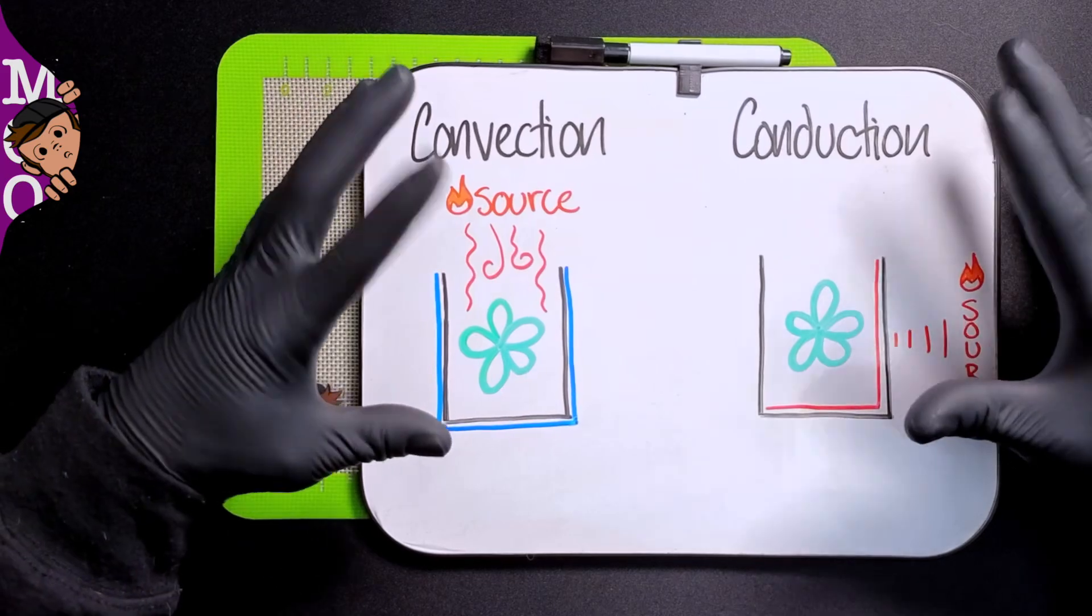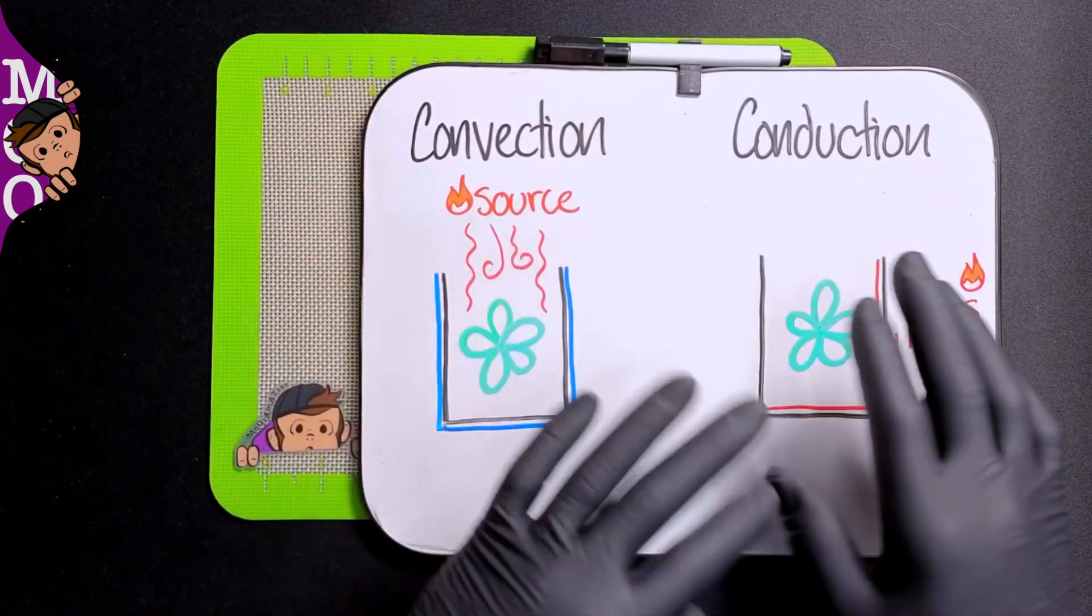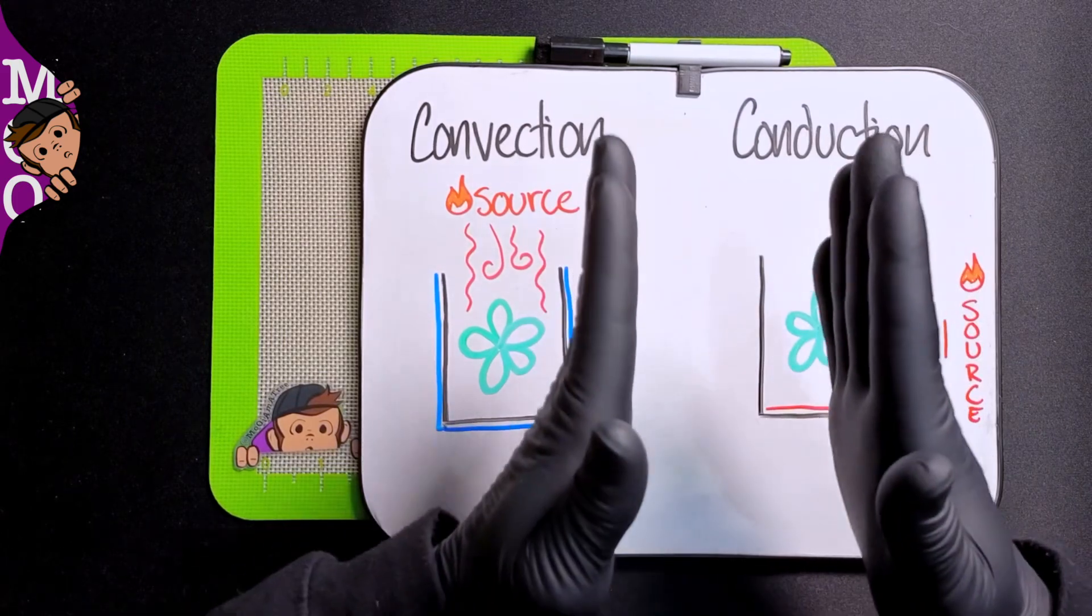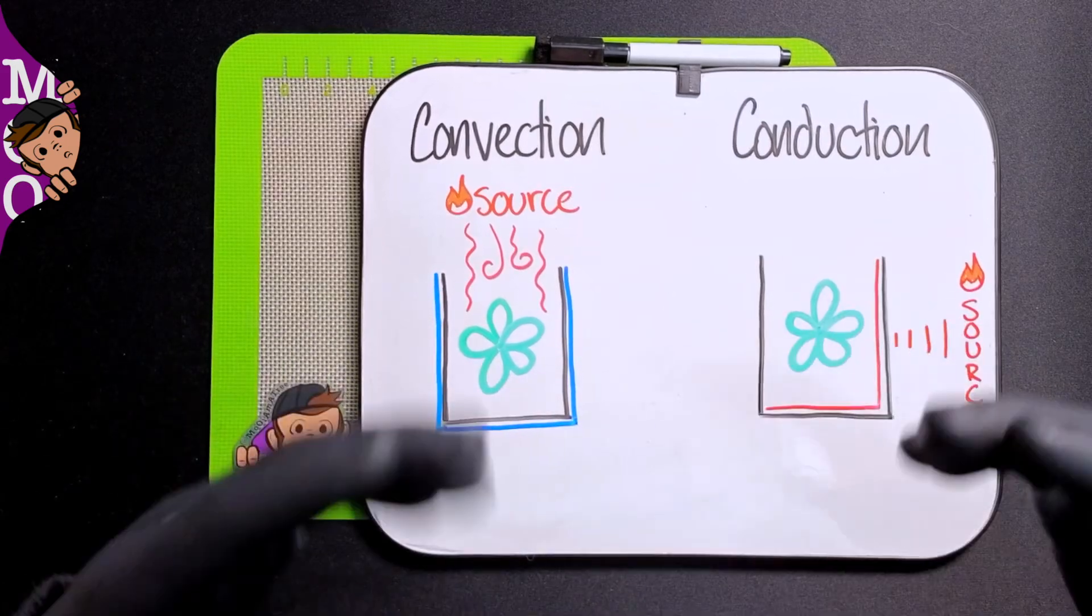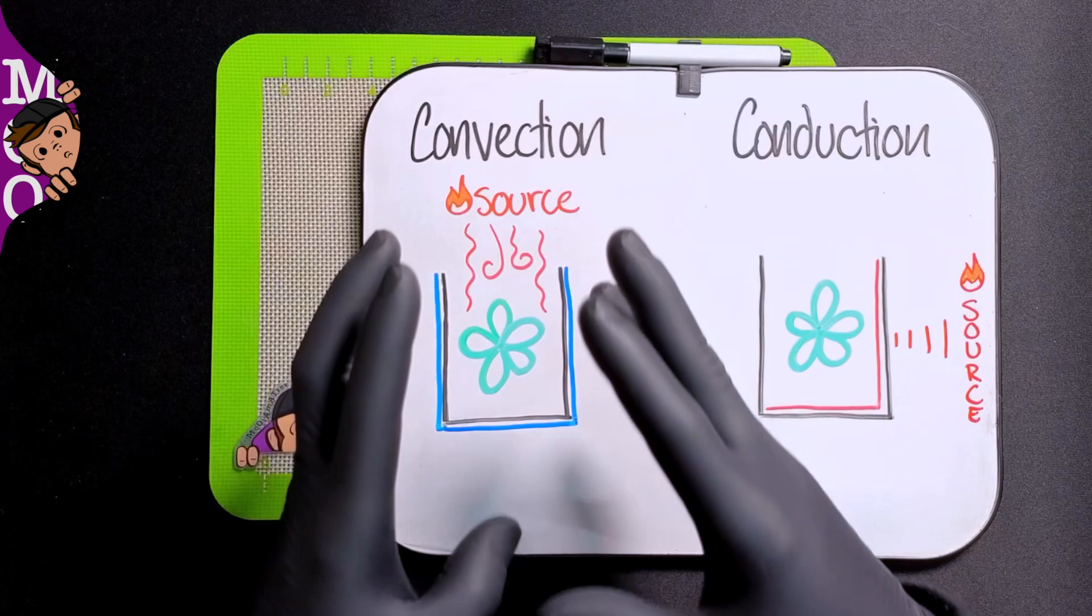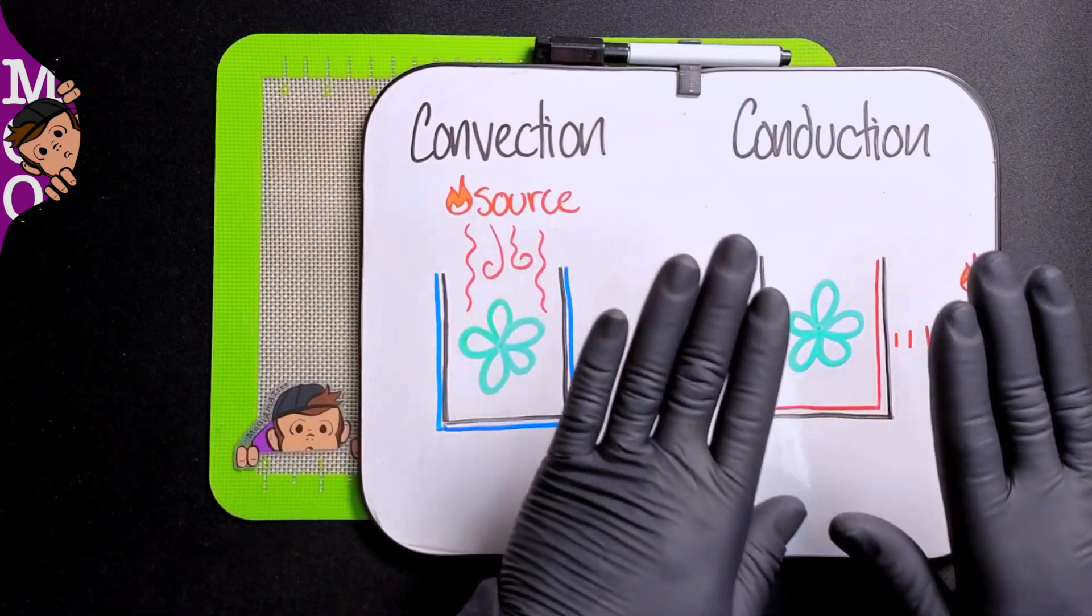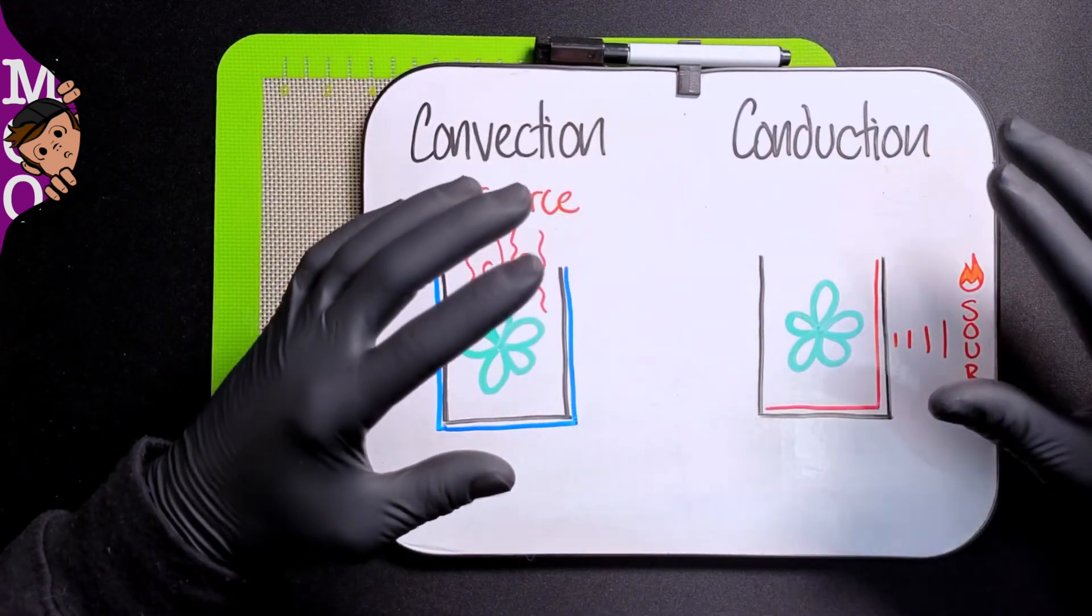While a lot of the devices that we have nowadays kind of float the line between convection and conduction—like the Dynavap is mostly conduction but the air coming up through the caps is convection, and stuff like the anvil, or if we're talking desktop vapes with the diffusers, it's definitely all convection. With the injectors you do get a little bit more of that conduction feeling because the injector is going to heat the bowl up just a little more.